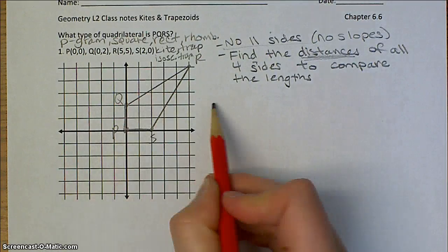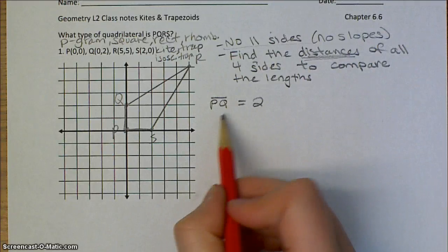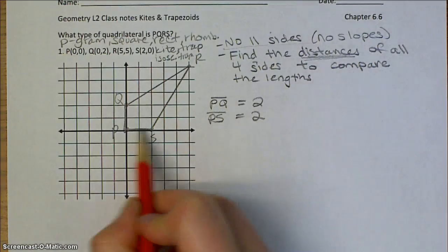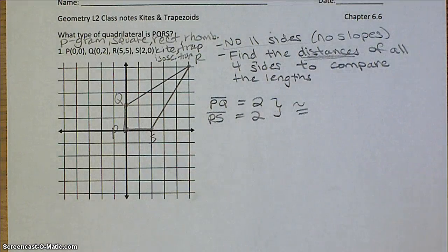Well, a couple of these are pretty quick. So PQ, I can just count that as two units. PS is also two units, just by counting. So right there, I have one pair of congruent consecutive sides.